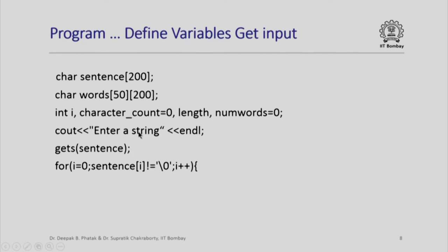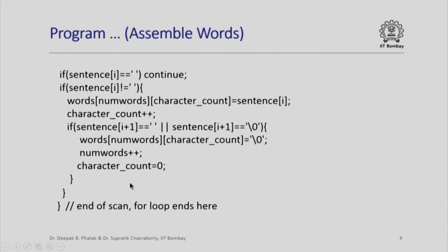I enter a string, this string is read by using a get a statement and I now scan the sentence. So, this is the major outer scan through which I propose to assemble all words, for i equal to 0, sentence i not equal to backslash 0. Notice that I need not even bother to find the length of this sentence, because I have to scan the complete sentence till the backslash 0 character is encountered. Please note that once I go inside this loop at any point in time, I will be looking at the i-th character of the sentence.